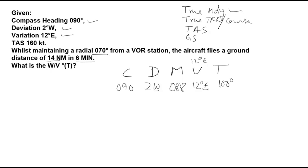Now for true track, we have magnetic radial as 070 and variation as 12 degrees east. So we have true track as 082 degrees. TAS is straightforward, mentioned as 160 knots.